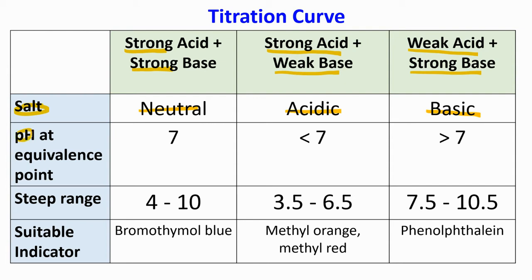Only then will you know the pH at the equivalence point — whether it equals 7, is less than 7, or more than 7. And because you know the characteristic of the salt, you can determine the steep range: 4 to 10 for neutral, 3.5 to 6.5 for acidic, and 7.5 to 10.5 for basic salt. Once we know the steep range, we can choose the suitable indicator.